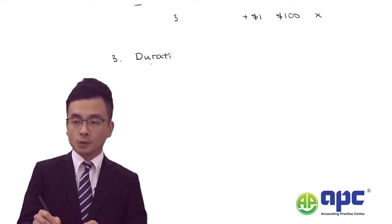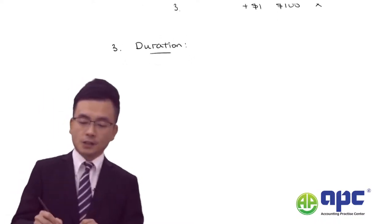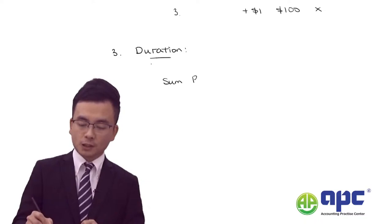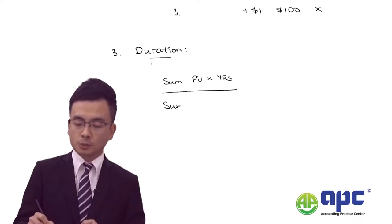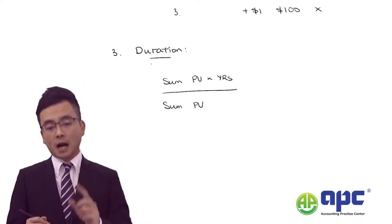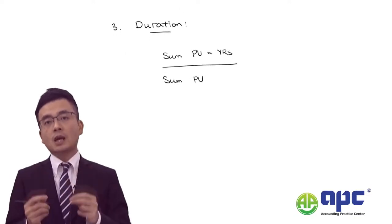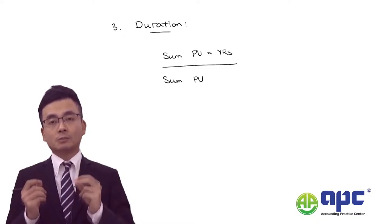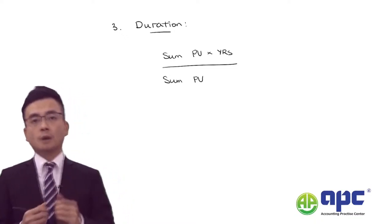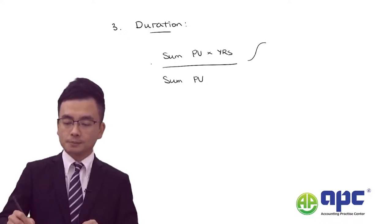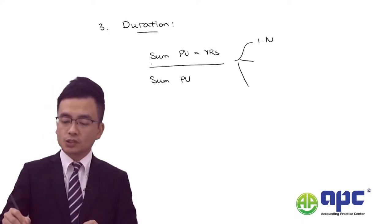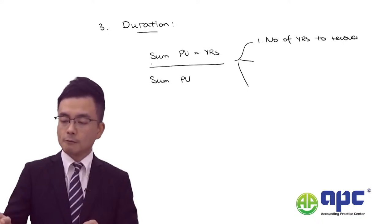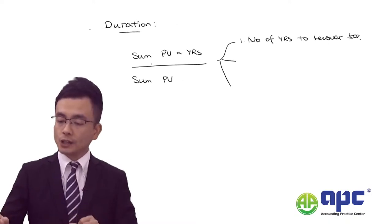To calculate duration, you take the sum of the present values of each year multiplied by the number of years, divided by the sum of the present values for each year. I would make three narrative points on the exam script. Firstly, duration stands for the number of years to recover 50% of the project's present value — making sure the cash flows are discounted at the company's cost of capital.